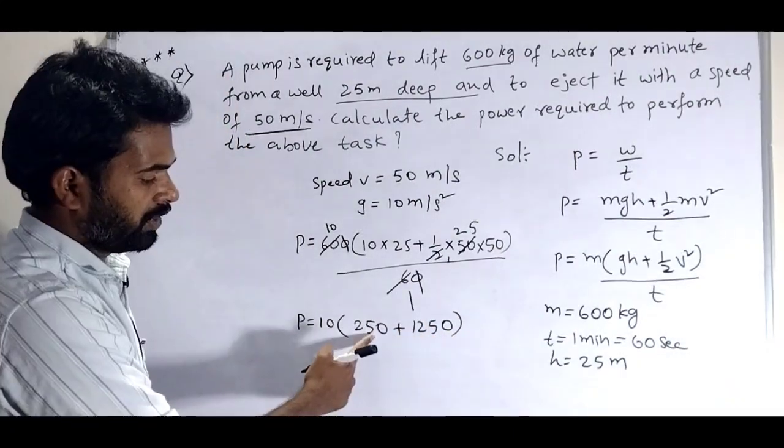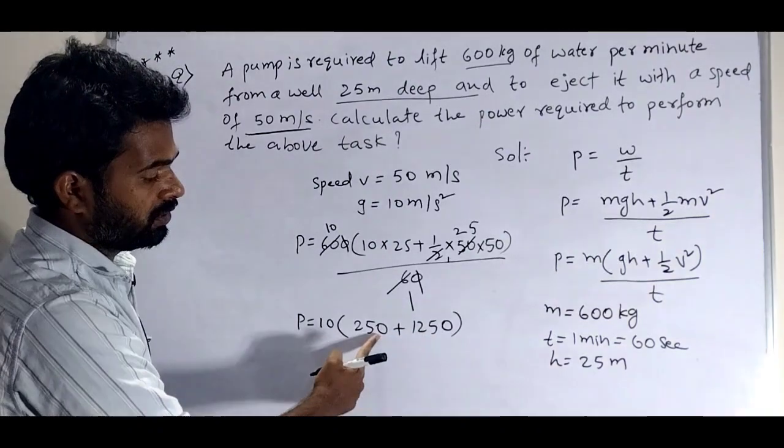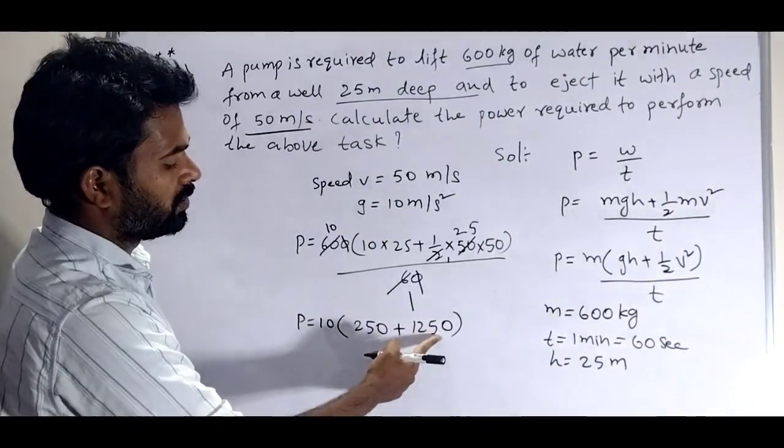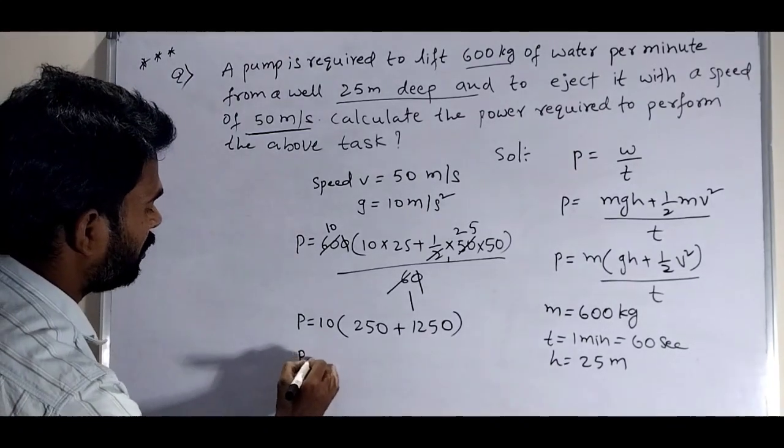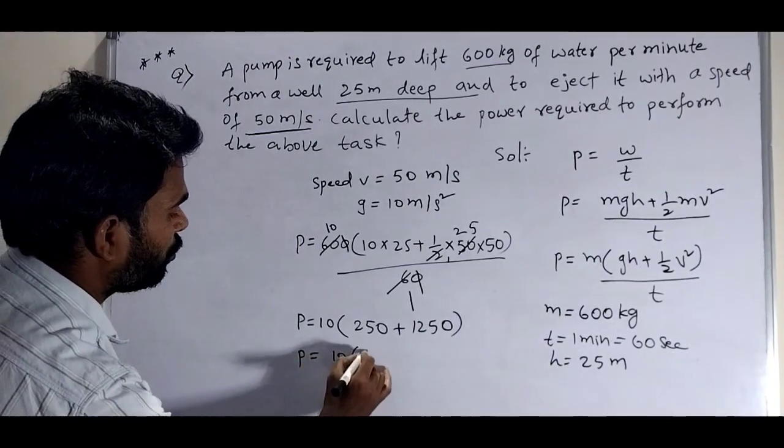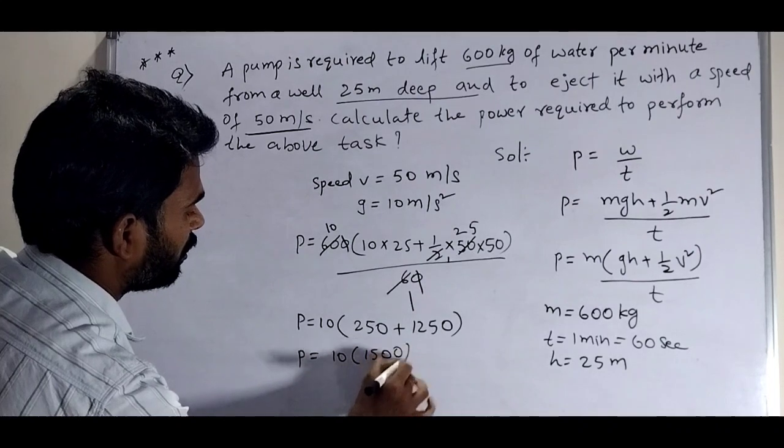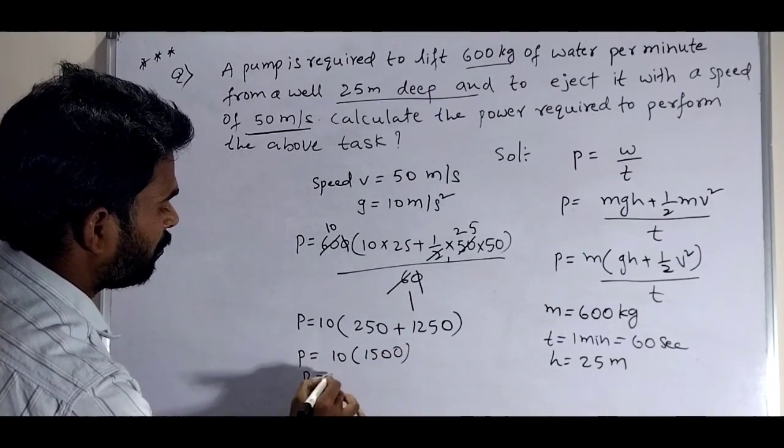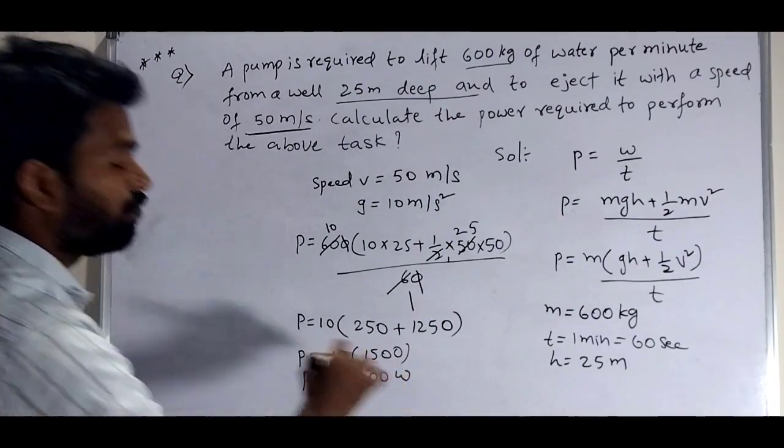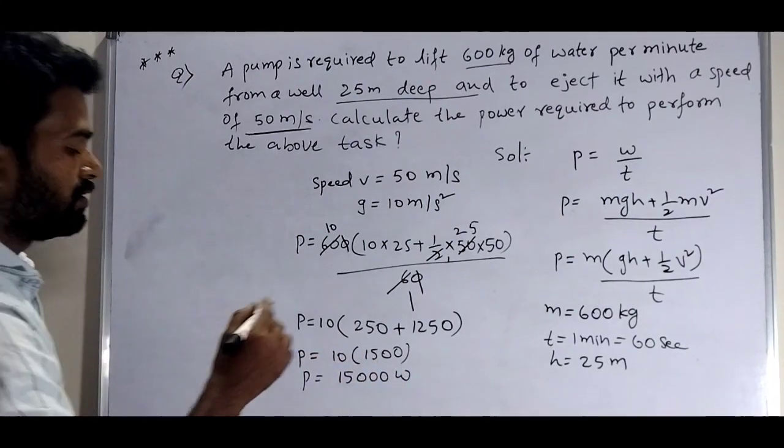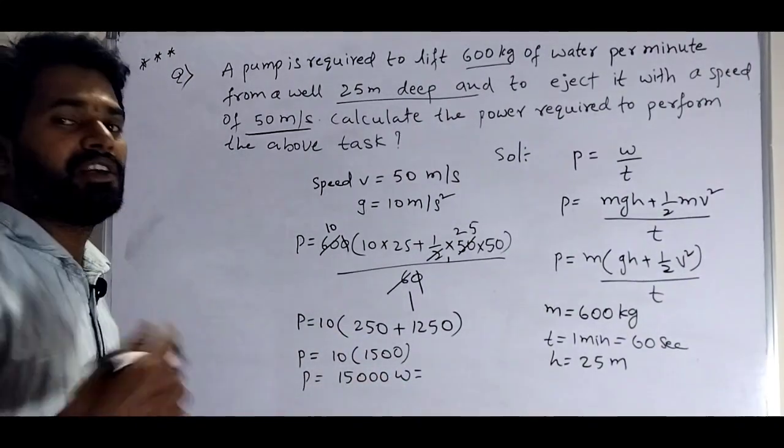So 250 plus 1250 equals 1500. Then 10 into 1500, P equals 15,000. This 15,000 is in watts.